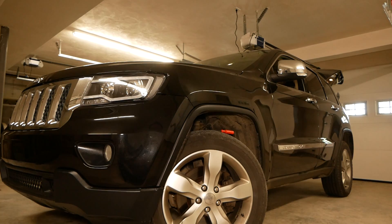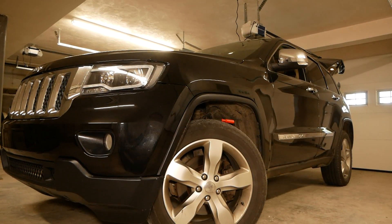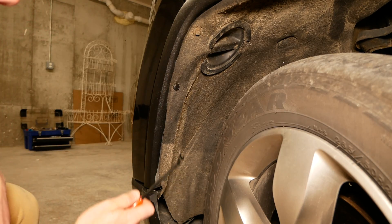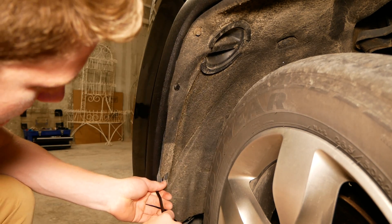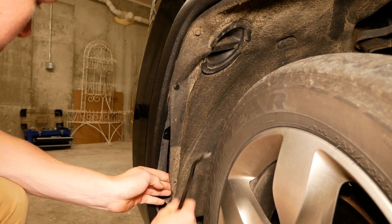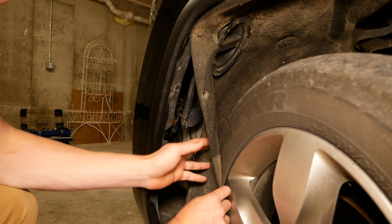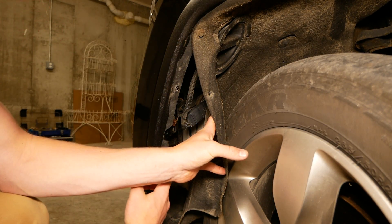First step here is going to be to pull back your fender liner using a rivet pry tool. We'll have to remove two rivets, one up here and one towards the bottom, which will allow us to pull back the fender liner which reveals the fog light.